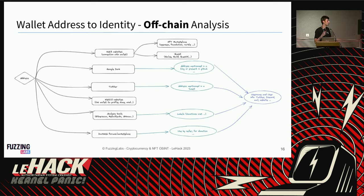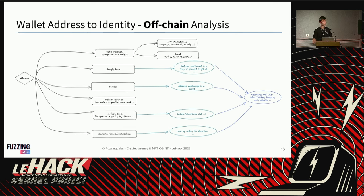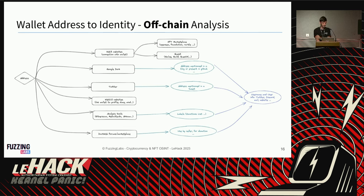On OpenSea you can find usernames and profile links. You should also Google the address, check Twitter and other social media to see if it's been mentioned, and use analysis tools that label addresses. When looking off-chain, I first checked OpenSea since the addresses owned NFTs, and found two accounts: gfields and marushki. I searched for them using Maltego and Twitter and found two accounts, though I wasn't fully certain.